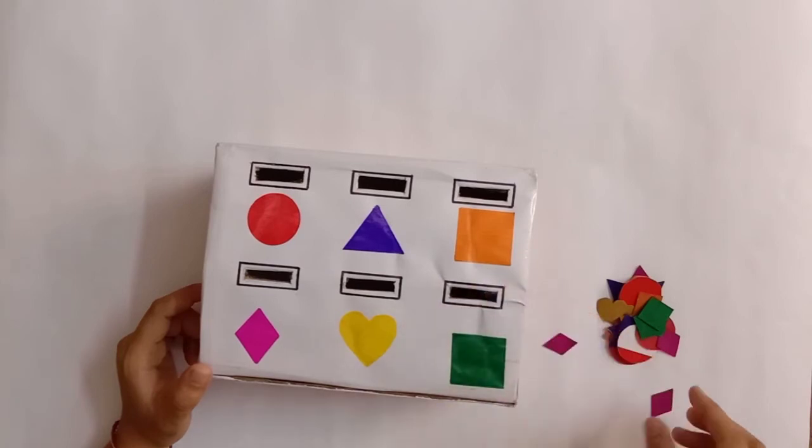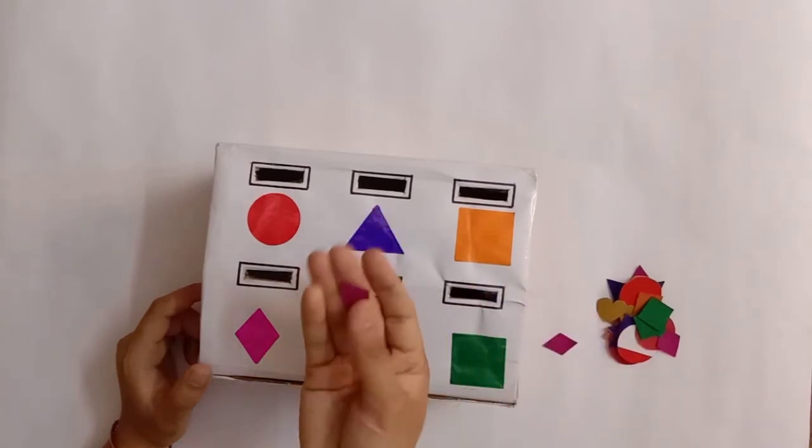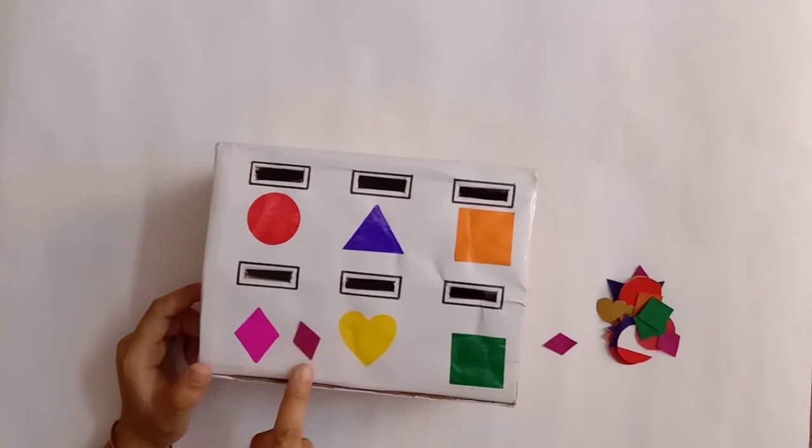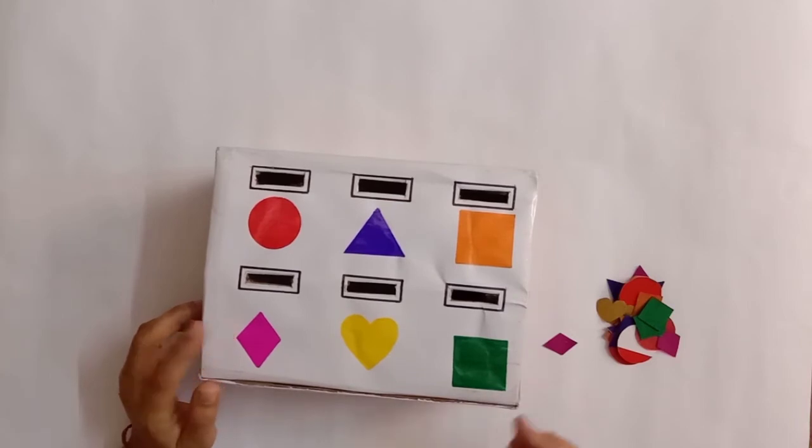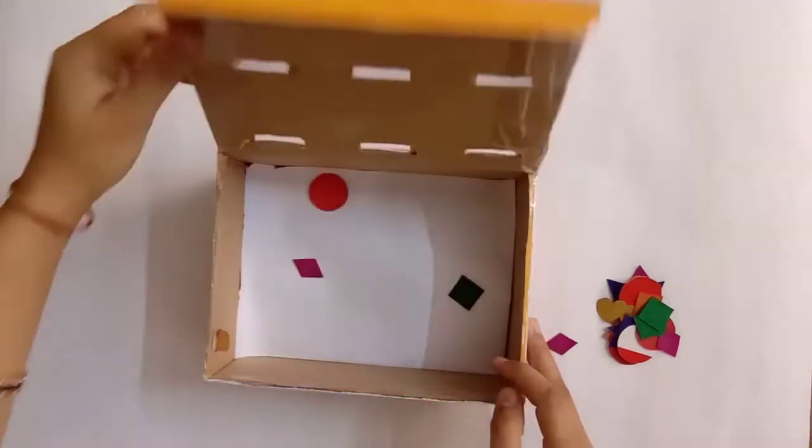Now the next one is diamond. So he'll find the diamond shape and put this shape inside this rectangular hole like this. Now if I want to recollect all the shapes that went inside, so I will just open the box and get all the shapes out.